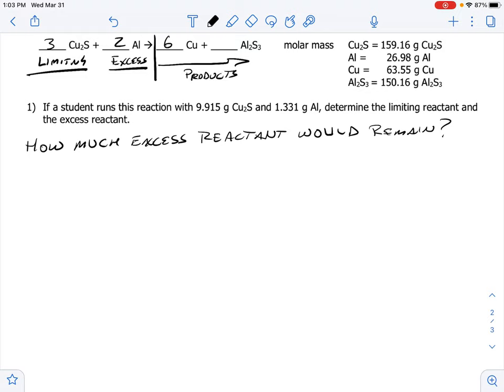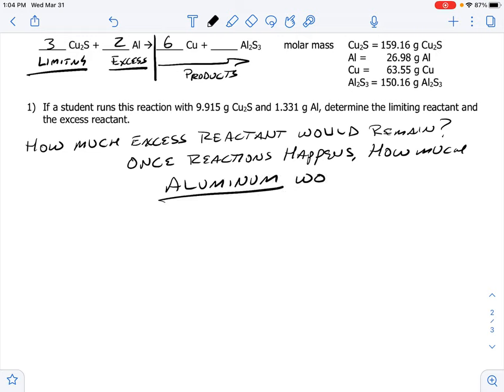To figure out how much excess reactant would remain, we really want to know once the reaction happens, how much aluminum would remain unreacted.